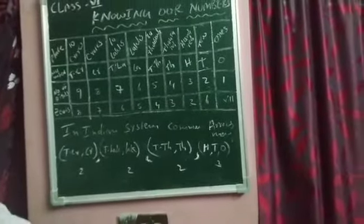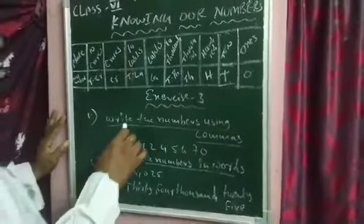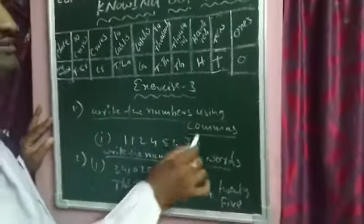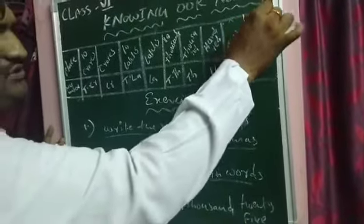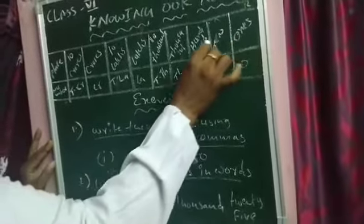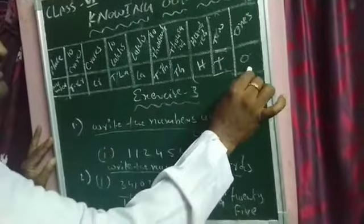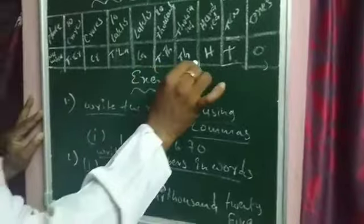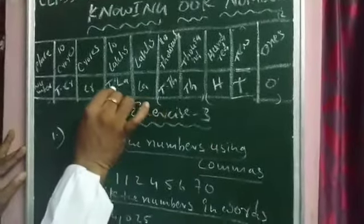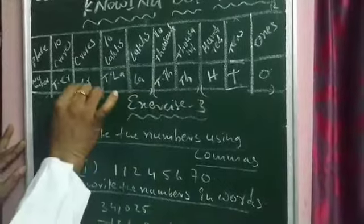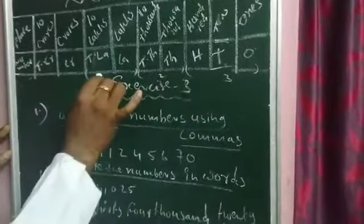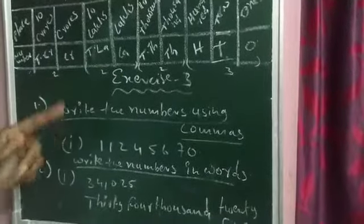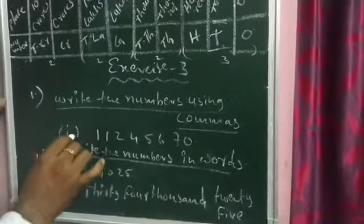Now let us observe exercise 3. The first question says: write the numbers using commas. As we already learned, from the right side we arrange: three digits — first comma — then thousands and ten thousands — second comma — then lakhs and ten lakhs — third comma — then crores and ten crores. The pattern is three digits, two digits, two digits.